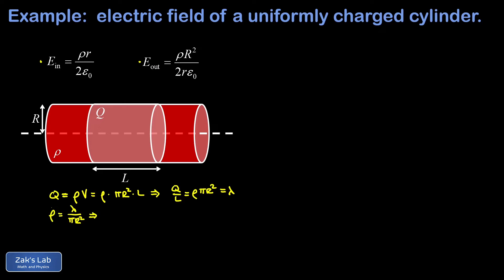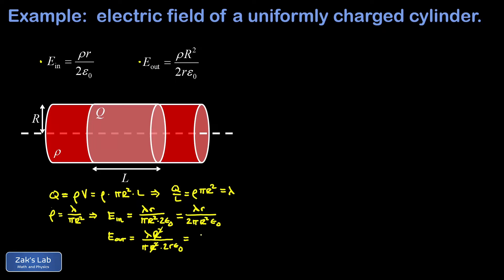Doing the same substitution for E out — replacing rho with lambda over pi big R squared — gives lambda R squared over pi big R squared times 2 r epsilon zero. The big R squareds cancel and we end up with lambda divided by 2 pi epsilon zero little r. These are our two results for the electric field inside and outside the uniformly charged cylinder in terms of the charge per unit length lambda. The result for the field outside is exactly the same as the result for an infinite line charge — outside the cylinder we can't tell the difference between a charged cylinder and a line of charge. This is similar to the uniformly charged sphere, where outside the sphere the field looks exactly the same as that of a point charge.